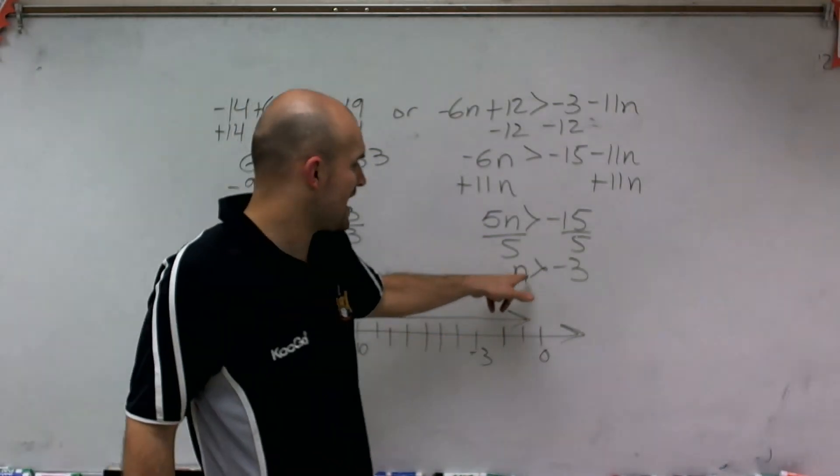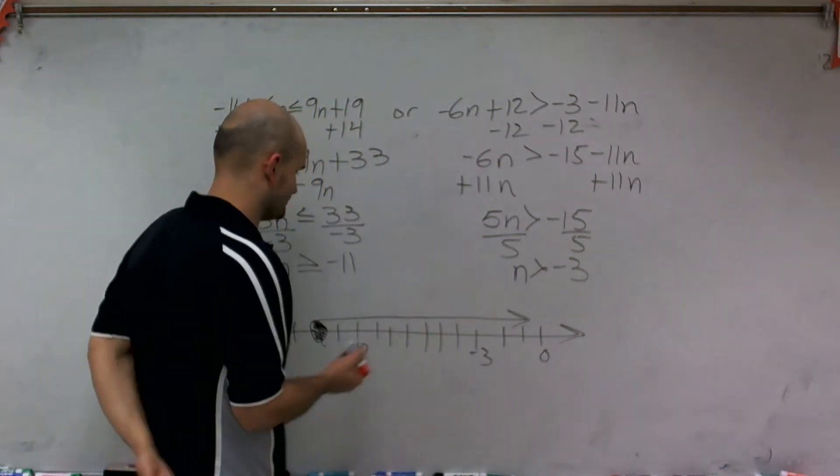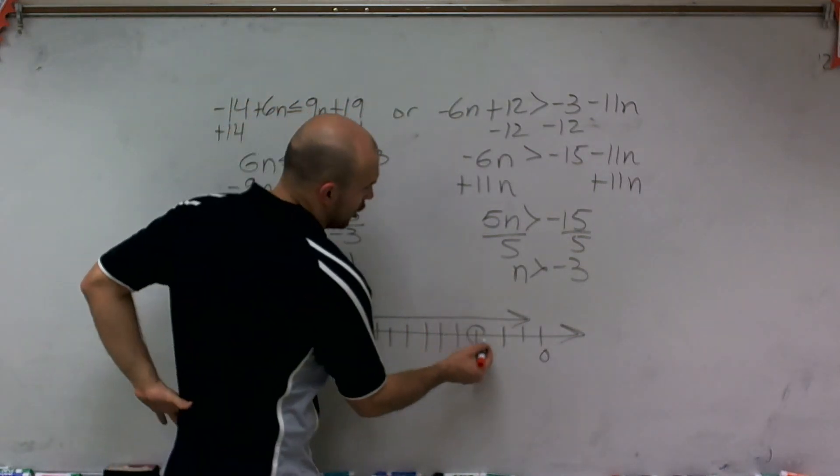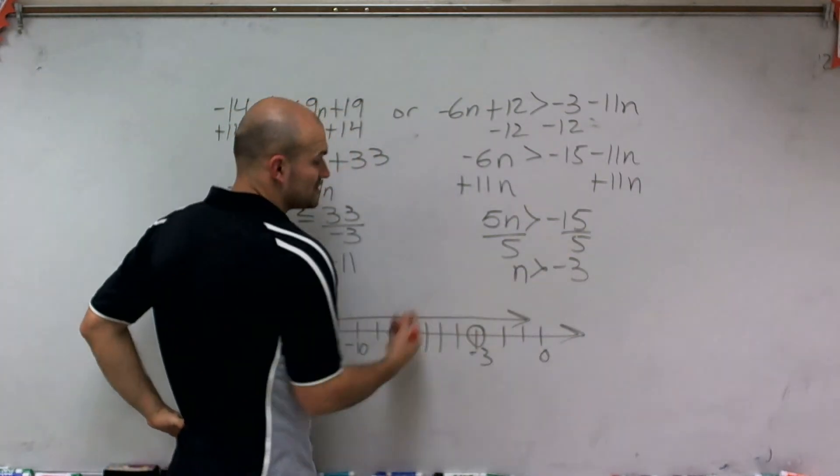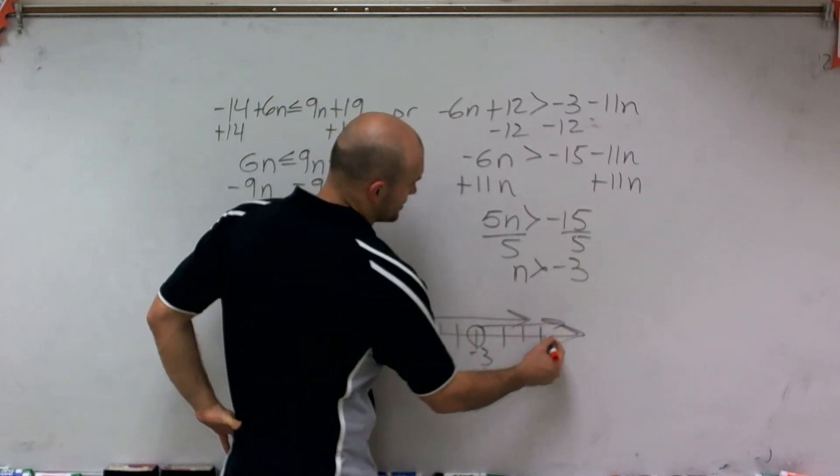Then it says n has to be greater than negative 3, greater than or equal to. So I have a nice open circle here, and then all the values that are greater than or equal to negative 3 is going to go in this direction.